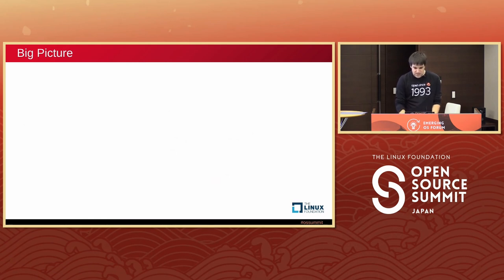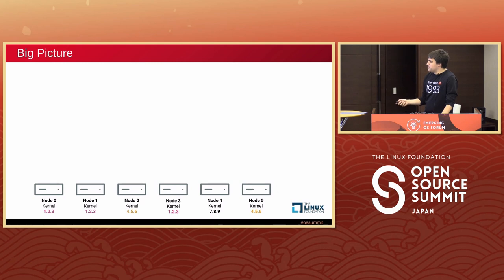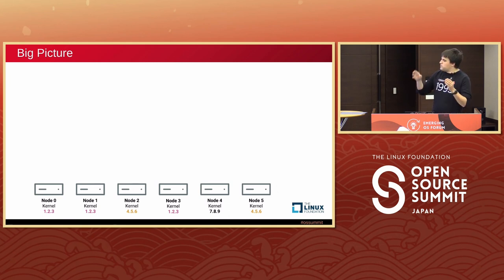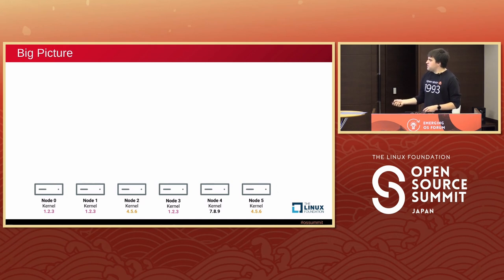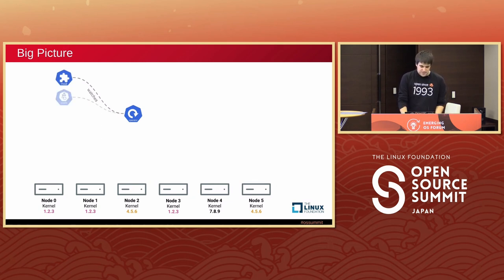Here is a diagram showing how the whole thing works. Consider a cluster with six nodes and three different kernel versions: kernel 1.2.3 running on nodes 0, 1, and 3; kernel 4.5.6 running on nodes 2 and 5; and kernel 7.8.9. In our Module resource we configure only two mappings — one for kernel 1.2.3 and one for kernel 4.5.6 — so the node running 7.8.9 will be excluded because we don't know how to build the kmod for it.